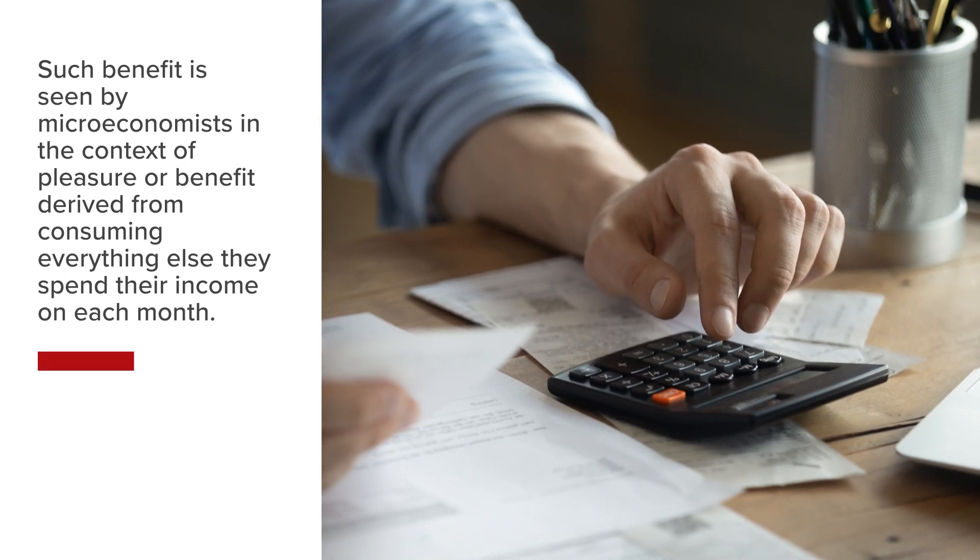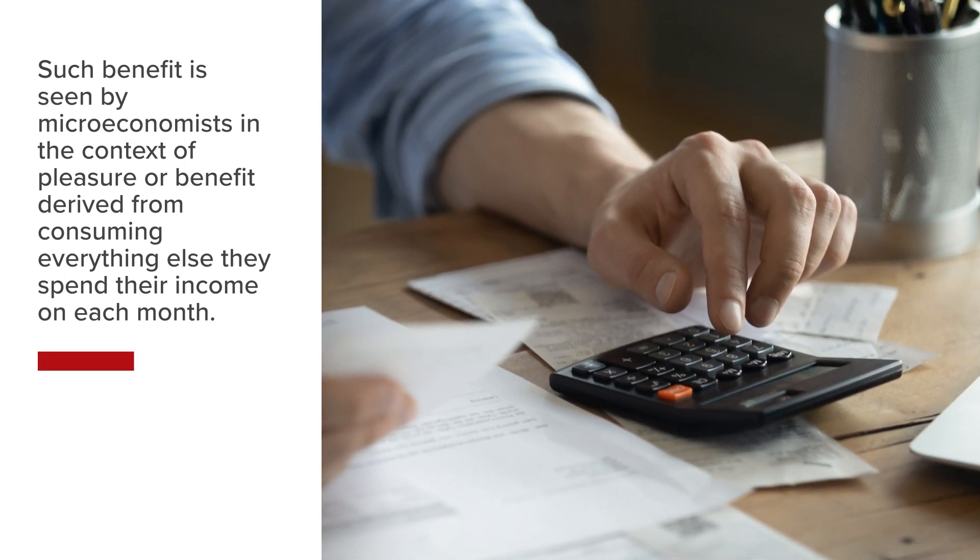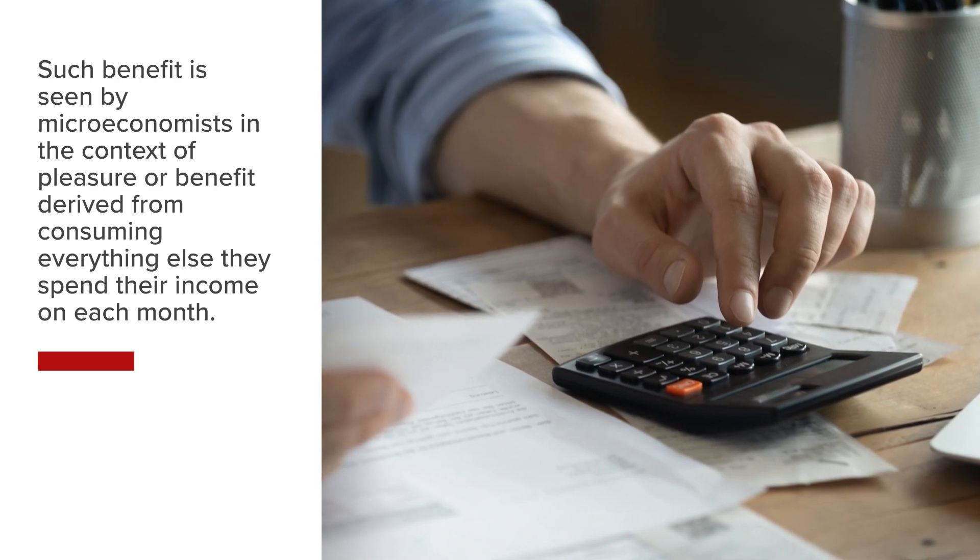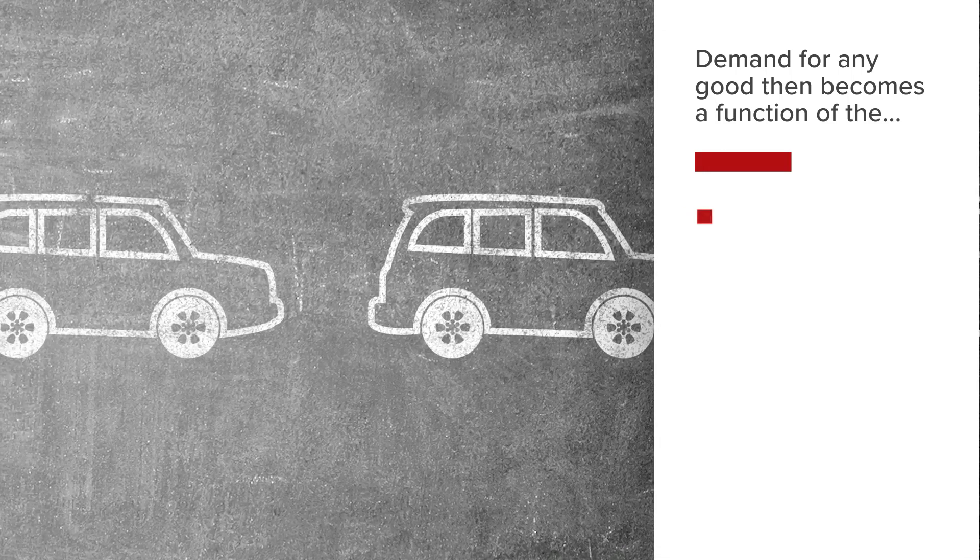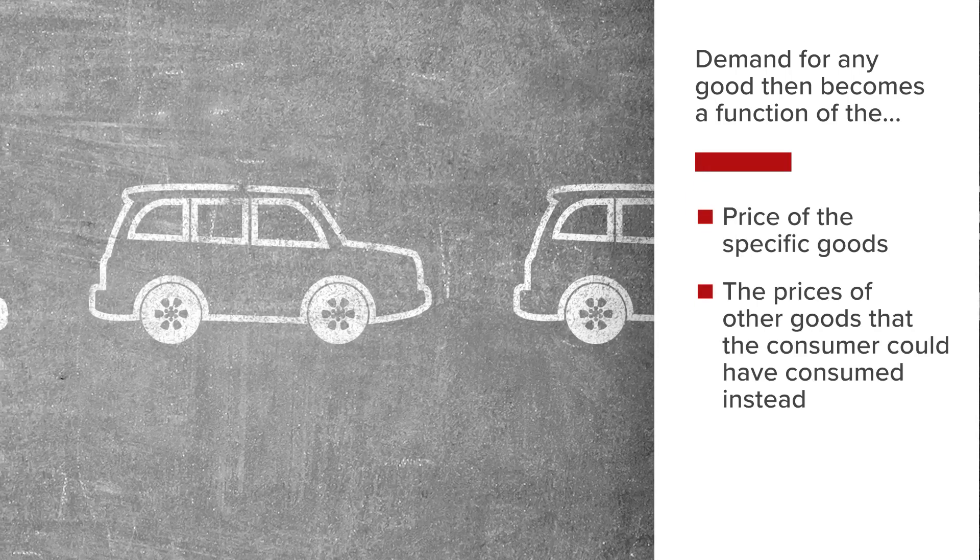Demand for any good then becomes a function of the price of the specific goods, the prices of other goods that the consumer could have consumed instead, and the wealth and income of the economic agent.